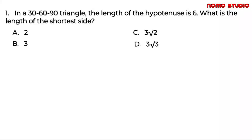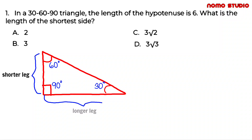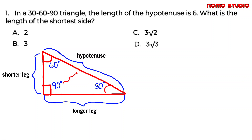Let me draw first a said triangle. This is the 90 degrees angle, this one is 30 degrees, and lastly we have 60 degrees. This is the shorter leg, longer leg, and lastly the hypotenuse. Remember that the hypotenuse side is always the side opposite the 90 degrees angle.